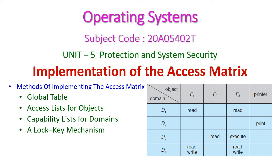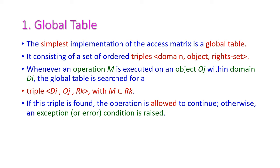In this operating system class we will see the second part of access matrix, that is implementation of access matrix. There are four methods to implement this access matrix: global table, access list of objects, capability list of domains, and lock-key mechanism. Let us see all those things one by one.